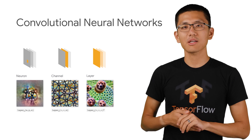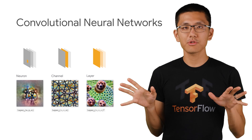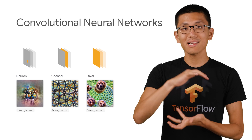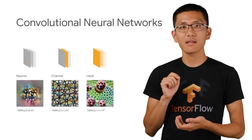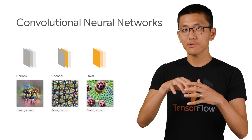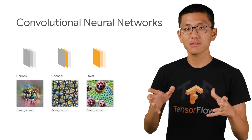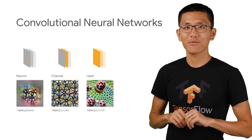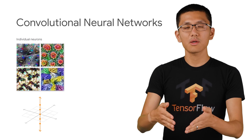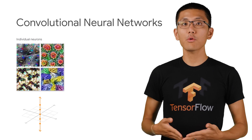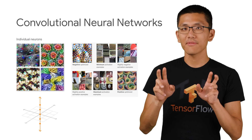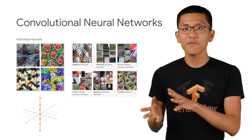Now that we have a basic understanding of how a convolutional neural network's layers are assembled, let's take a look at how to find out what a given neuron, or perhaps a group of neurons, is looking for. When an image is passed through the network in what is called a forward pass, each neuron responds or activates to a different degree.